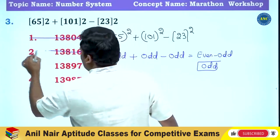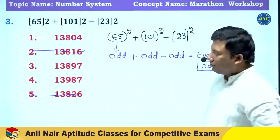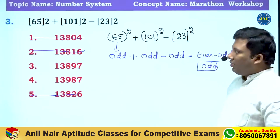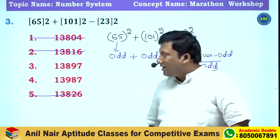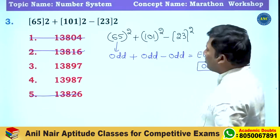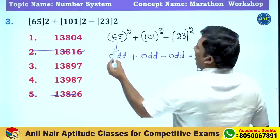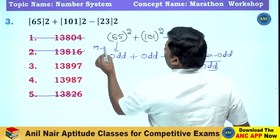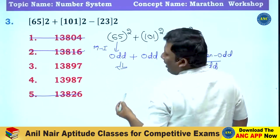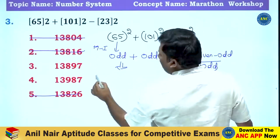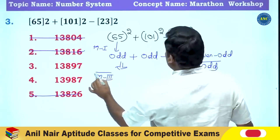The answer should be an odd number, so the first option is out, second option is out, and the fifth one is out. We are left with option number three and option number four. That is Method 1. Now let's move to Method 2.